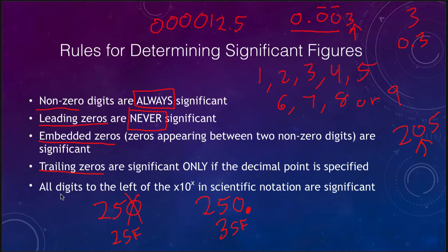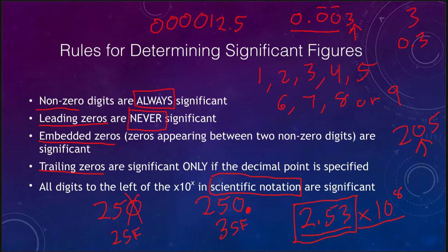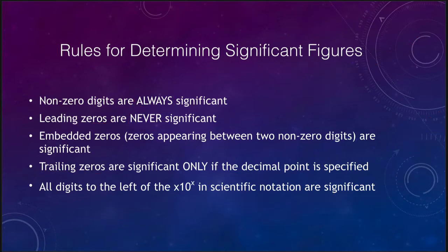Finally, let's look at numbers in scientific notation. If we write 2.53 times 10 to the eighth, the 10 to the eighth is essentially a placeholder for a bunch of zeros. We only look at the number out front — all the digits to the left of the exponent are significant when written in standard scientific notation. So in this case it would have three significant figures. The 10 to the eighth power is needed but is not used for calculating significant figures.